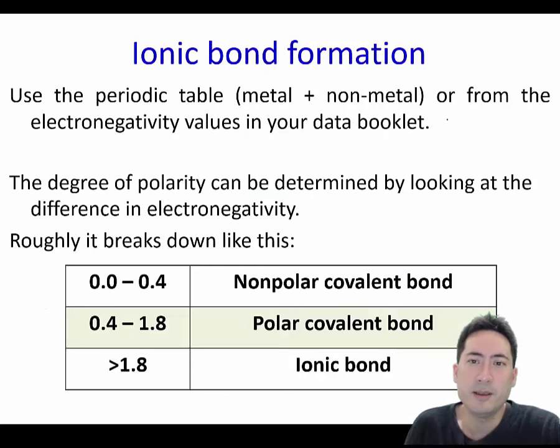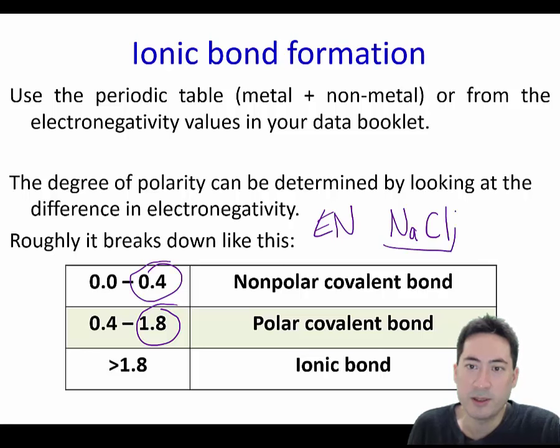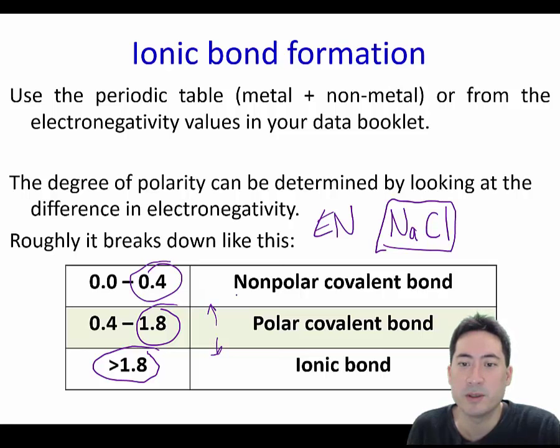Now moving more onto the IB, off the IGCSE and onto the IB. There are now two numbers you need to remember: 0.4 and 1.8. So use your data book to look up the electronegativity values and you'll find for something like NaCl, that's strongly ionic. You minus the two electronegativity values from that and it'll be greater than 1.8. If it's between 0.4 and 1.8, it's polar covalent, so it's got some ionic character and it's got some sharing covalent character. If it's less than 0.4, non-polar covalent, which we'll talk about next lesson.